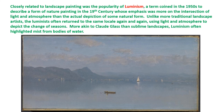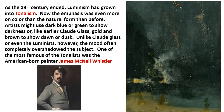Closely related to landscape painting was Luminism, a term coined in the 1950s to describe a form of 19th century nature painting whose emphasis was more on the intersection of light and atmosphere than the actual depiction of natural form. Unlike traditional landscape artists, Luminists often returned to the same locale again and again, using light and atmosphere to depict the change of seasons. As the 19th century ended, Luminism had grown into Tonalism, where the emphasis was even more on color — artists might use dark blue or green to show darkness, or gold and brown to show dawn or dusk — with mood completely overshadowing the subject. One of the most famous tonalists was the American-born painter James McNeill Whistler.